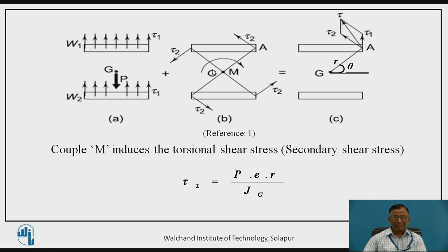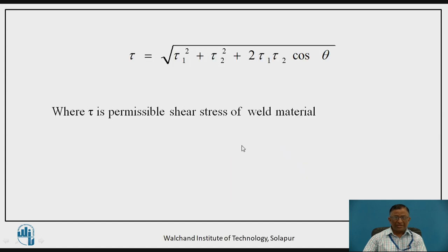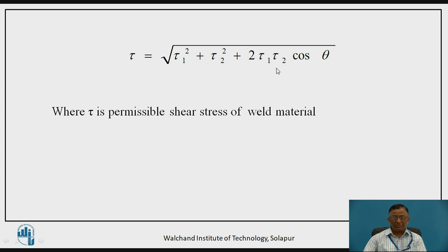The total resultant shear stress τ is obtained by combining τ1 and τ2. The equation becomes: resultant shear stress τ = √(τ1² + τ2² + 2·τ1·τ2·cosθ). Finally, for safe design, τ is set equal to the permissible shear stress, from which any unknown design parameter can be calculated.